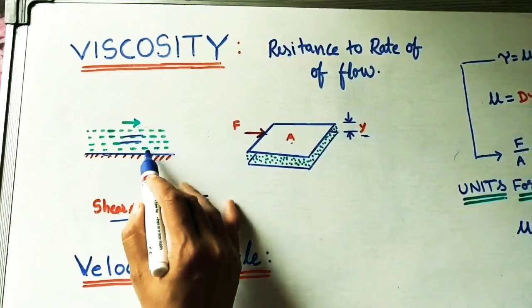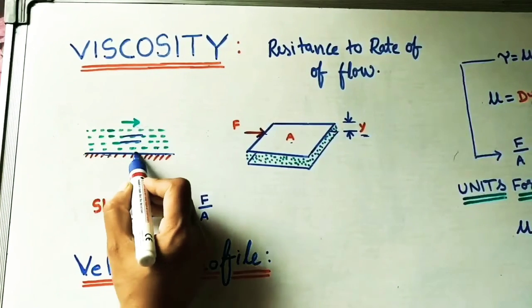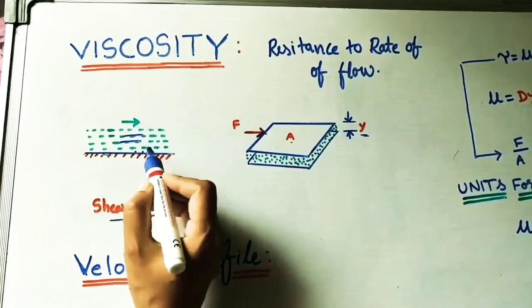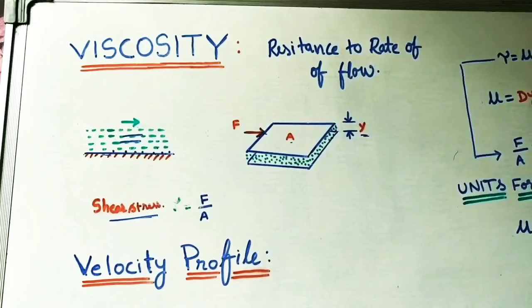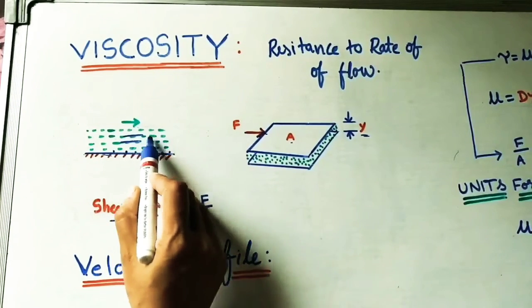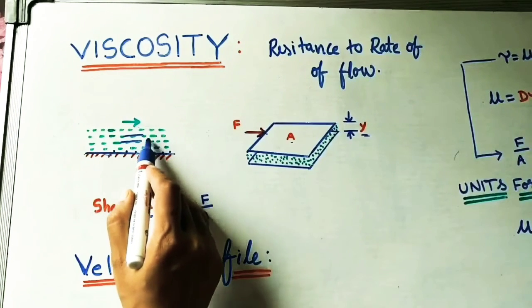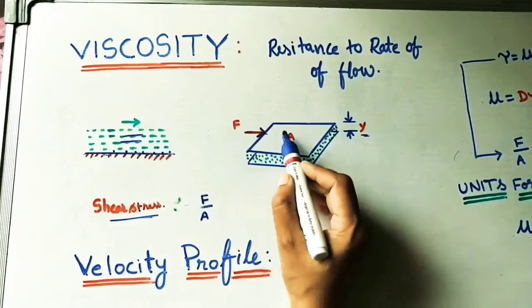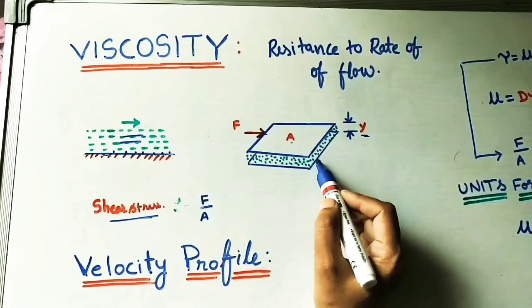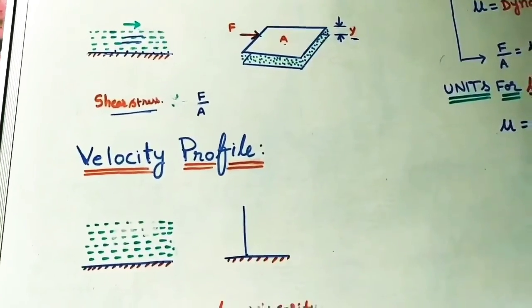Adhesive forces are attractive forces between two different materials — solid and liquid. Adjacent to this solid surface, the velocity of the liquid particles is zero because of these adhesive forces. Between the liquid particles themselves, there are cohesive forces. Because of cohesive forces, the velocities between two layers are different — the upper layer moves at a higher velocity compared to the lower one.